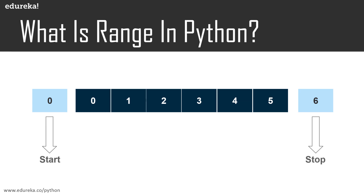Let's take it to Jupyter notebook and I'll show you how you can use a range function in Python. Before that, I'm going to show you how you can get a range of six numbers. If you type the range function and specify the number 6, it's going to start from 0 and go until 5 — it's not going to incorporate the last number which is 6.